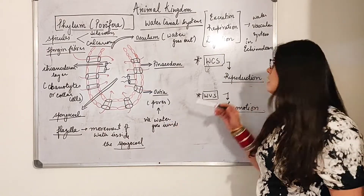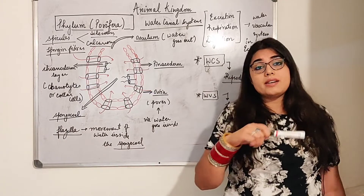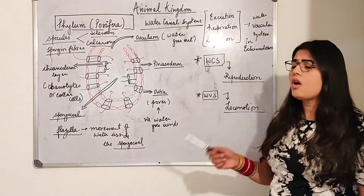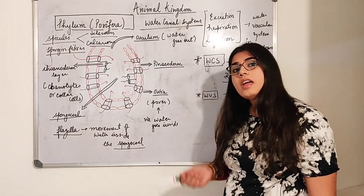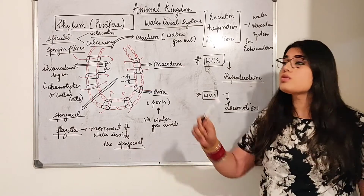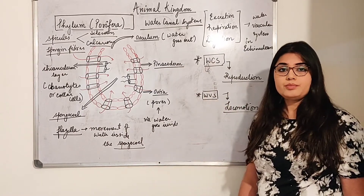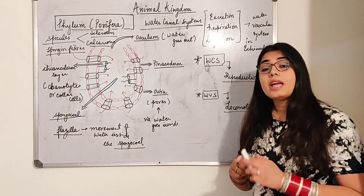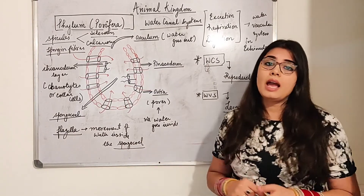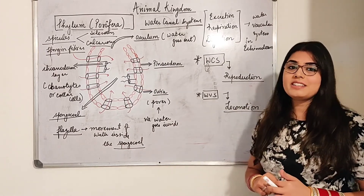So this is all about the water canal system, and a few points about the water vascular system of other organisms as well. Any doubts can be cleared in the next video or you can put them in the comment section below. In the next video we will be moving forward with the physical attributes of the phylum. Any doubts or confusions, you can ask me anytime — I'll be happy to help. I'll see you guys in the next video, until then take care.